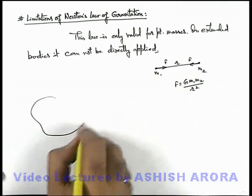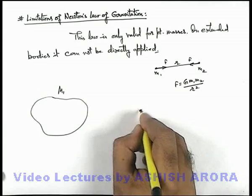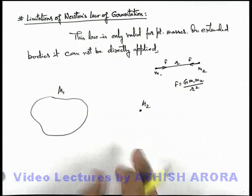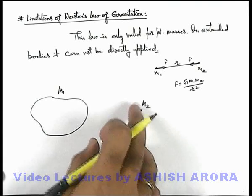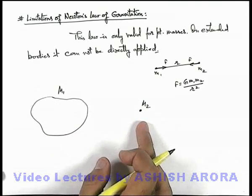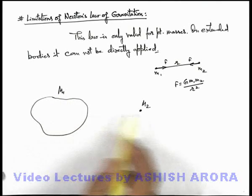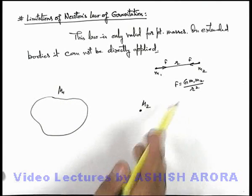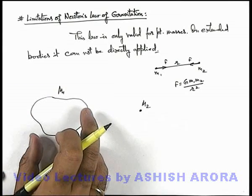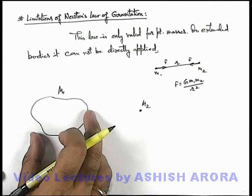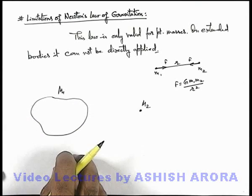Say for example we have a large-size object m₁ and there is a point object m₂, and we wish to find the gravitational force of attraction between the two — we cannot directly apply it. We cannot even concentrate the whole mass at its center of mass and apply Newton's law of gravitation, because center of mass is a point where we can concentrate mass as far as its inertial properties are concerned. When we talk about gravitational properties, it cannot be concentrated at the center of mass.